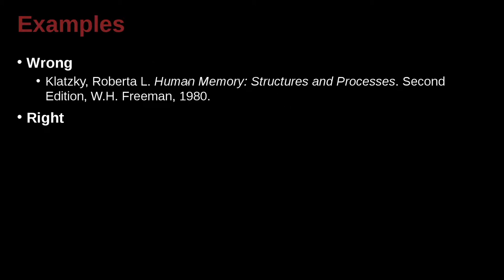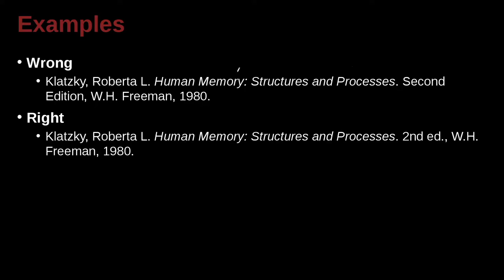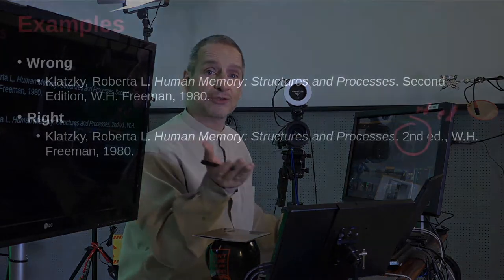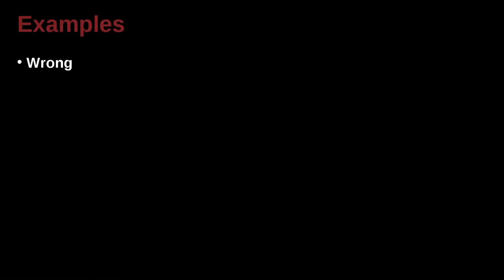Klatsky, Roberta L. — Human Memory: Structures and Processes, 2nd Edition. W. H. Freeman, 1980. We have the author, the name of the book, and the edition specified. However, in MLA we need to be careful about writing the edition — MLA allows you to write 'nd' for 'second' and 'ed' for 'edition.' There are several such abbreviations in MLA where words are shortened, and there's really no way to know them without the MLA guidelines right next to you.